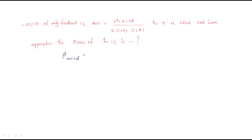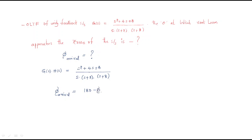He is asking to find the angle of arrival. The open loop transfer function G(s)H(s) = (s² + 4s + 8) / (s(s+2)(s+8)). For angle of arrival, the formula is: θ_arrival = 180° ± (summation of zeros angles minus summation of poles angles), where φ = Σ(zeros angles) − Σ(poles angles).